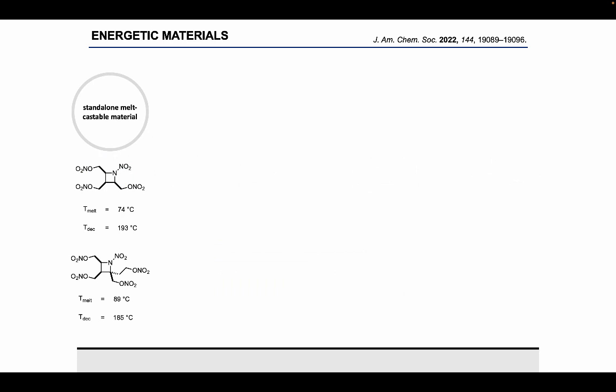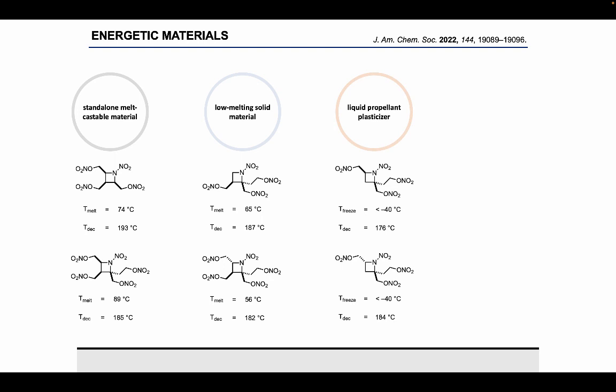In total, with our collaboration, we were able to develop two new standalone melt-castable materials. We were also able to synthesize two low-melting solid materials, and then finally two liquid propellant plasticizer energetic materials. We did have one that could not be successfully nitrated, where when we had these two quaternary centers next to the nitrogen of the azetidine, it was just too sterically encumbered for that nitration to proceed fully. But in general, looking across all of the different nitroazetidines that we developed, it's really interesting to see how these small structural changes really impact the types of applications these materials are used for. Even just diastereomers versus regioisomers, or adding and taking away substitution, can result in vastly different energetic materials.